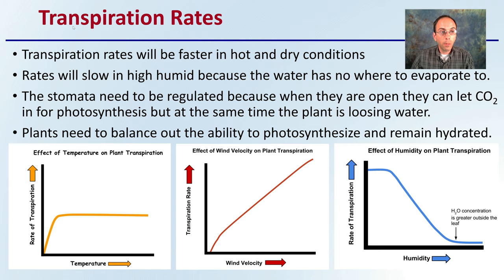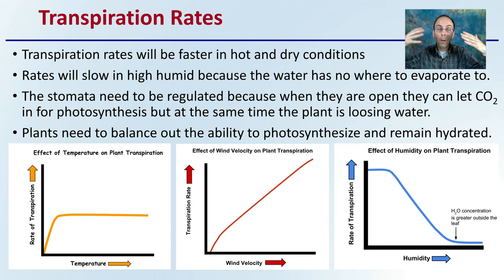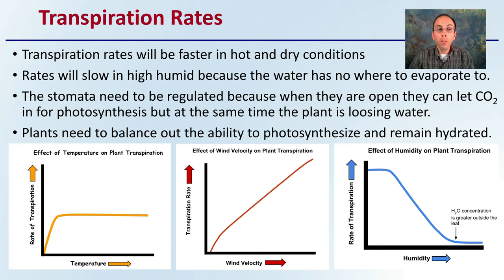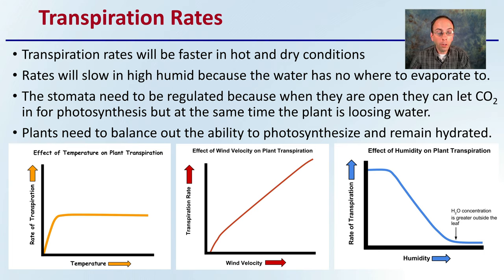Transpiration rates will be faster in hot and dry conditions. Rates will slow in high humidity because water has no place to evaporate to. When it's hot and humid, you feel sticky because you're trying to evaporate to cool yourself, but there's so much moisture in the air you get that sticky feeling. The stomata need to be regulated because when they're open, they let CO2 in for photosynthesis, but the plant is also losing water, so it must ensure it's adequately hydrated. Plants need to balance the ability to photosynthesize and remain hydrated. The rate of transpiration increases with temperature to a certain point and then plateaus.